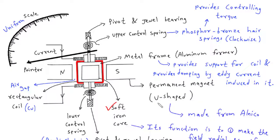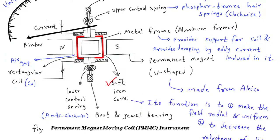Soft iron core: The soft iron core is a piece of ferromagnetic material that is placed inside the rectangular coil. Its purpose is to enhance the strength of the magnetic field generated by the permanent magnet. The soft iron core efficiently channels the magnetic flux, increasing the overall sensitivity of the meter.